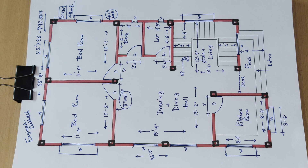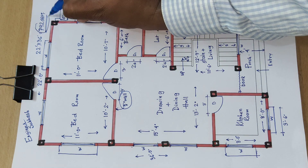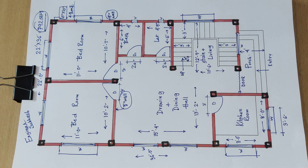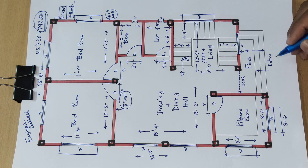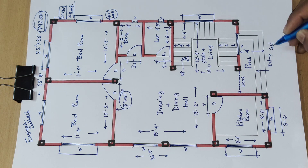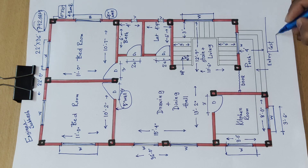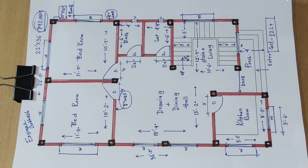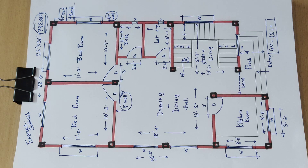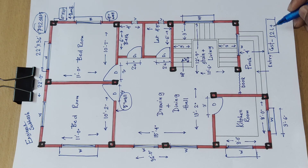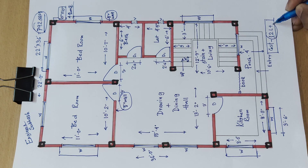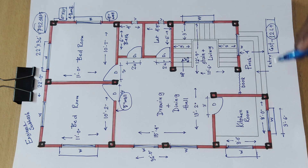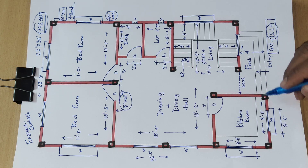So this is the completed plan of 792 square feet. The minimum construction cost for this plan and design is approximately 12 lakh rupees plus additional expenses.